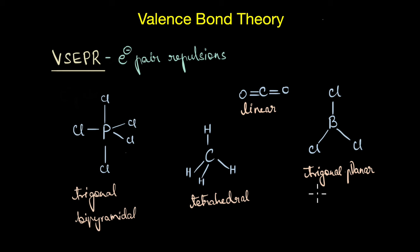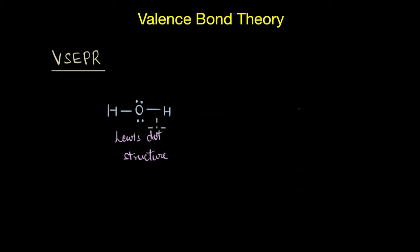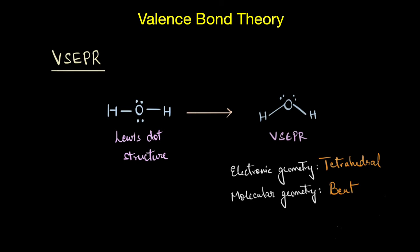For instance, this is the Lewis dot structure of water, H2O, while this is how the molecule arranges itself spatially. This arrangement gives the least amount of repulsion between the electron pairs, both the lone pairs of electrons as well as the bond pairs of electrons. From here, you can see that the electronic geometry, or the way in which the electrons are arranged, is according to tetrahedral geometry, whereas the molecular geometry, which is not inclusive of the lone pairs, is a bent shape.